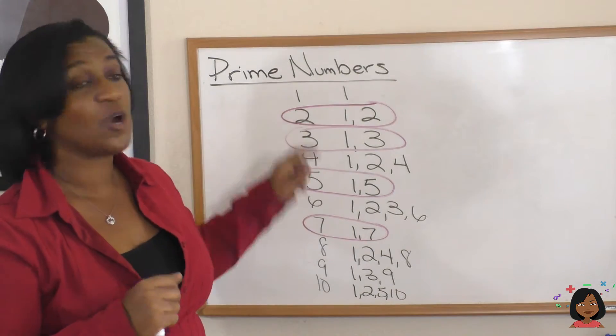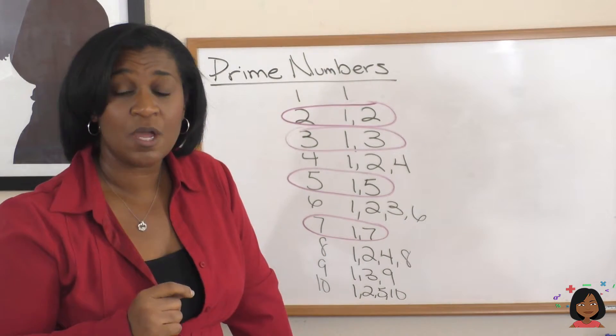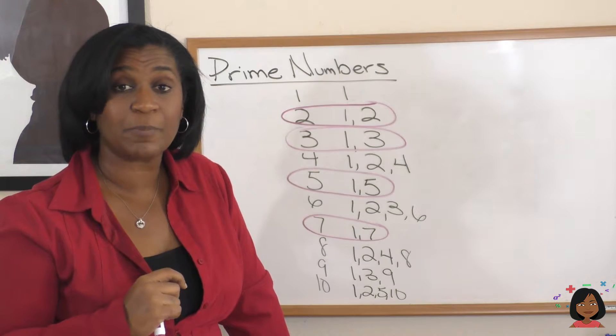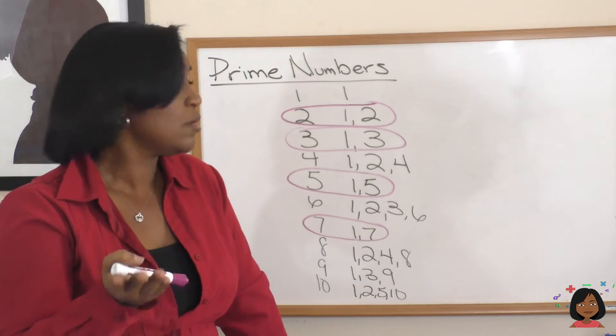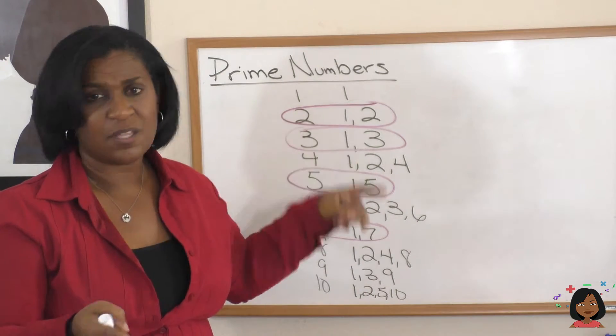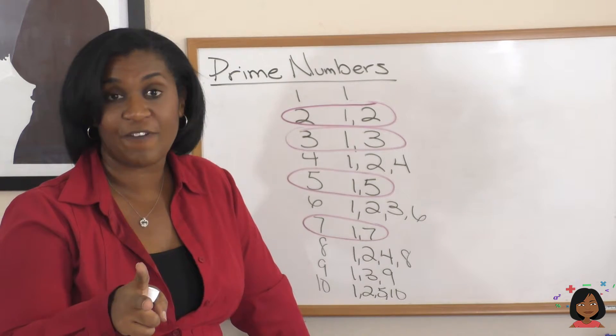Now, I do want to point out, you want to notice, I didn't highlight number 1. 1 is not a prime number because does it have 2 factors? No, it only has 1. So that doesn't count. We're looking for 2 factors.